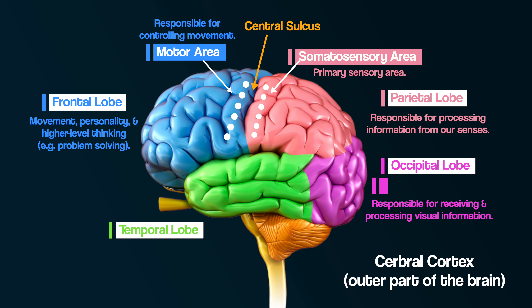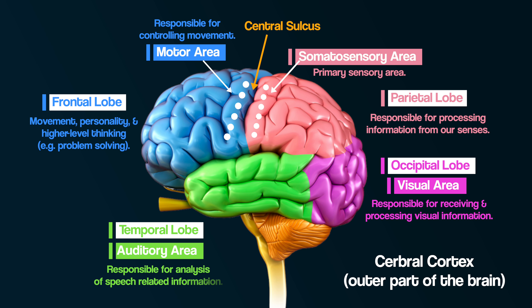The occipital lobe is thought to be responsible for sight, and so this is where the visual area is. The temporal lobe is thought to be responsible for receiving and processing sounds, and so this is where the auditory area is.